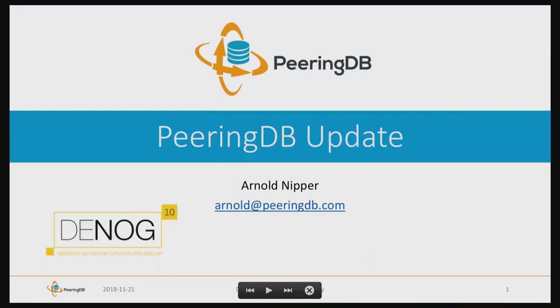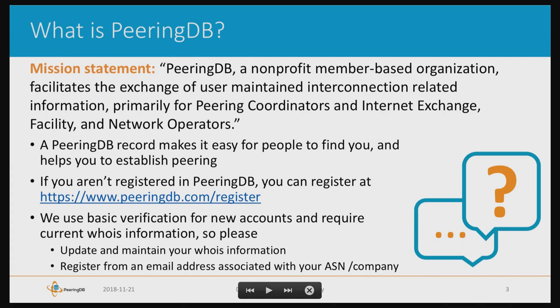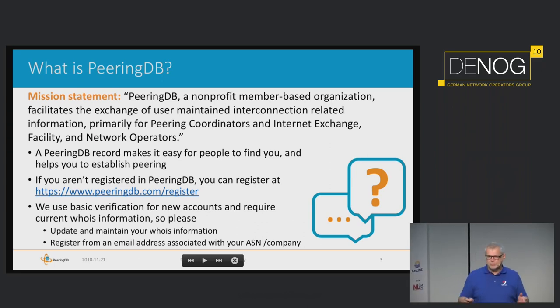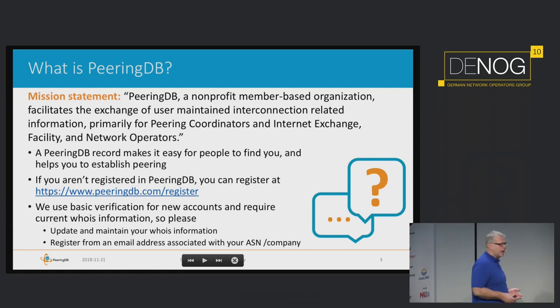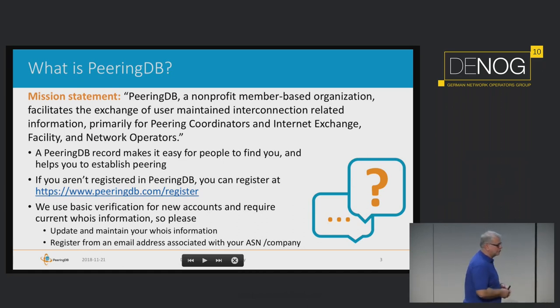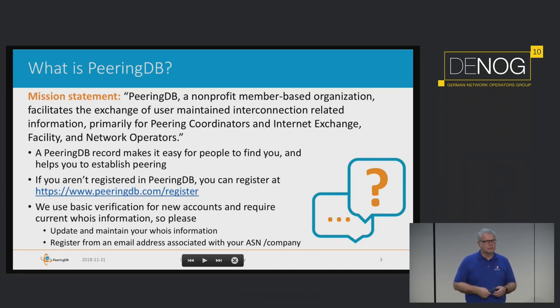So, what is PeeringDB? PeeringDB is basically a database where you find all the information about networks, internet exchanges, and facilities. This is the crucial information you need if you want to peer or interconnect. The internet is made of networks, but they have to interconnect — typically through direct interconnects, or better yet, by meeting in facilities where you can connect with many networks, or by interconnecting to an internet exchange.